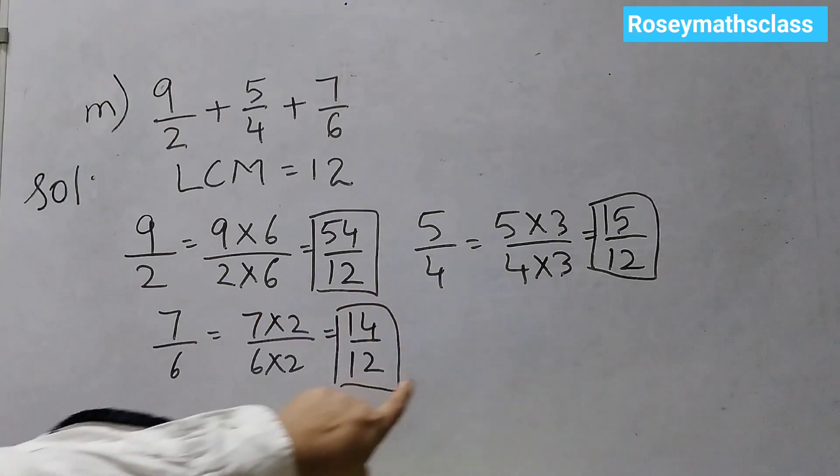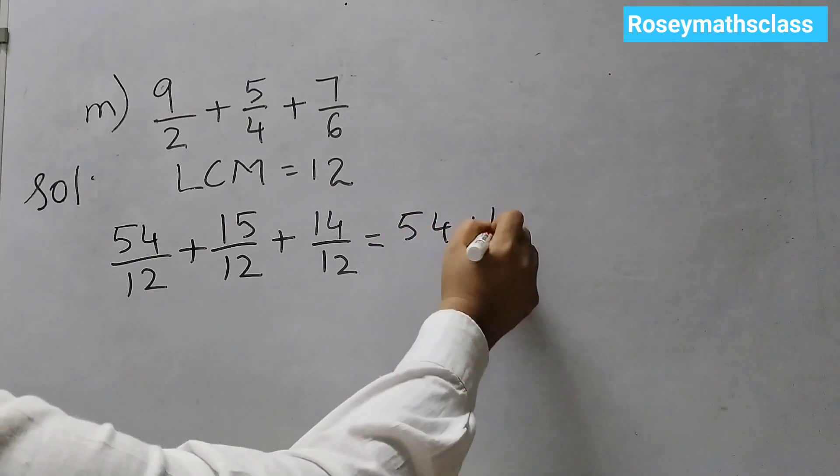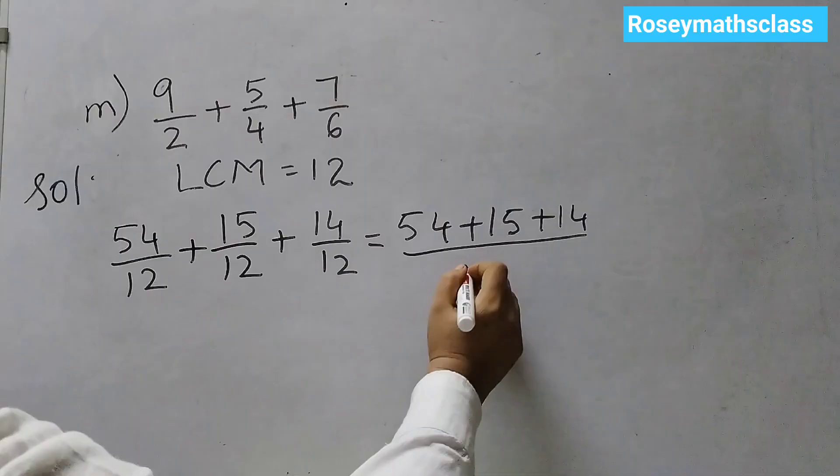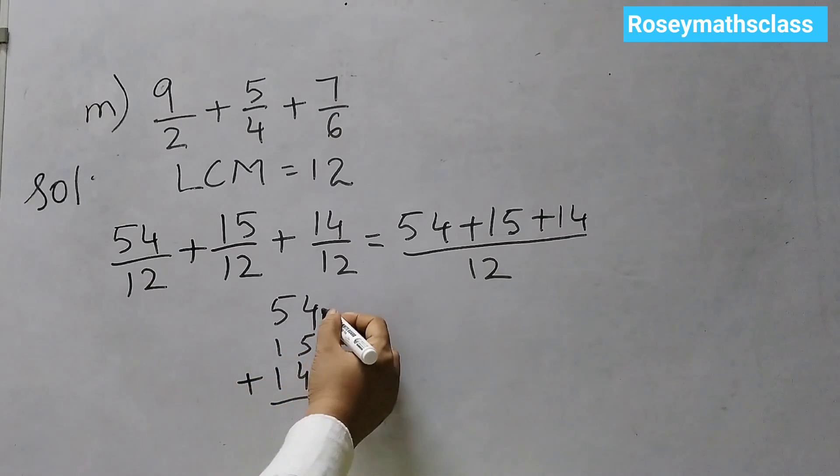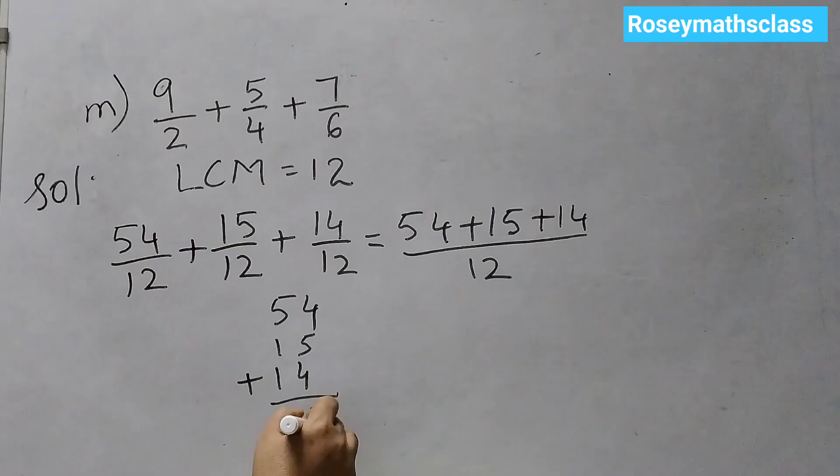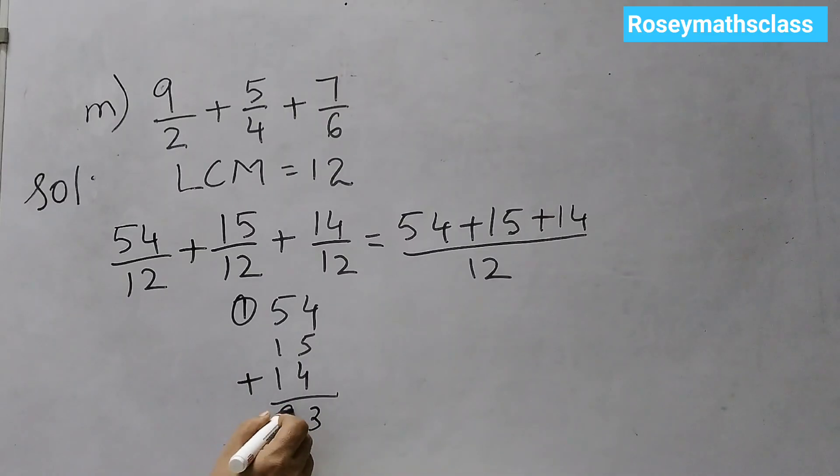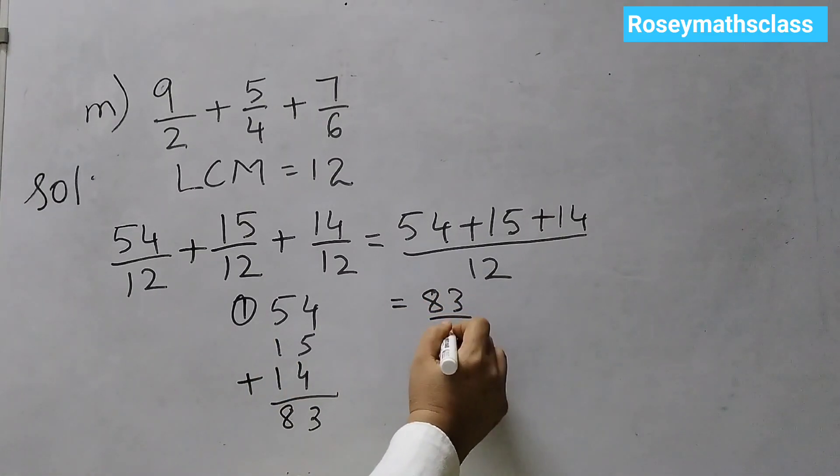These are the fractions that we will be adding now. So, please make a note of this. 54 plus 15 plus 14 divided by 12. Now, we will add up. 54, 15, 14. 5 plus 4 is 9, 9 plus 4 is 13, 1 carry over 5, 6, 7, 8. So, 83. Answer is 83 upon 12.